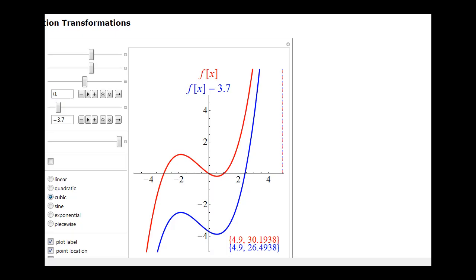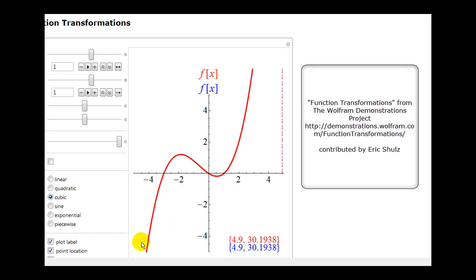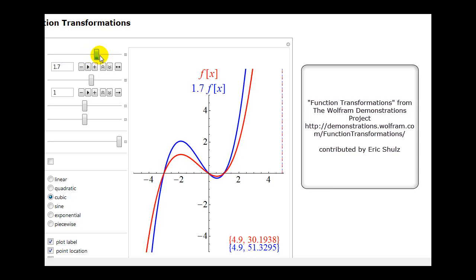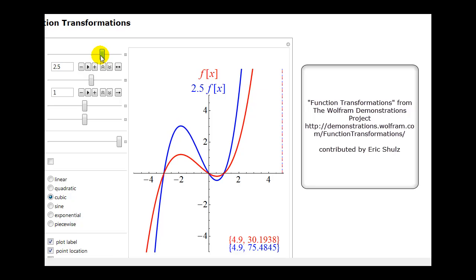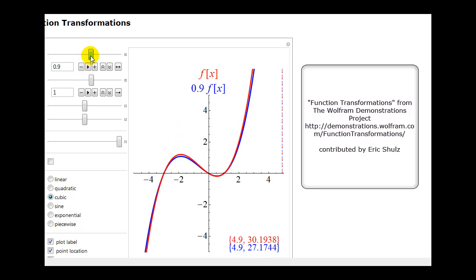Let's take a look at a graph of this. The red function is the parent function and the blue function will be the transformed function. When a is greater than 1 the blue function will be stretched vertically by a factor of a. Also notice that the x-intercepts do not change when we stretch the graph vertically, or when a is between 0 and 1 and the blue function is compressed vertically, as we see here.